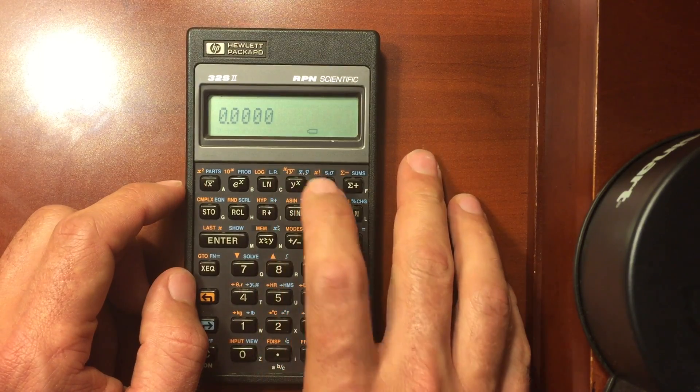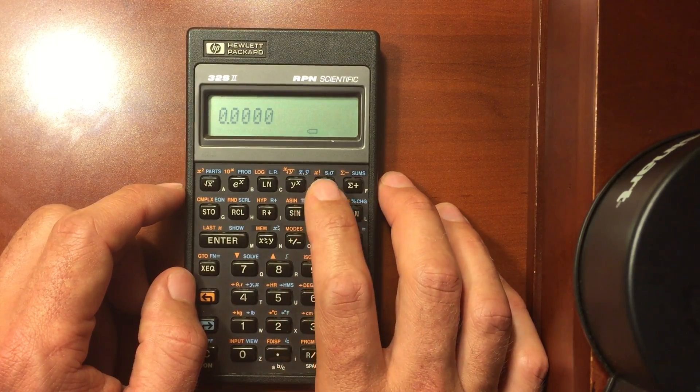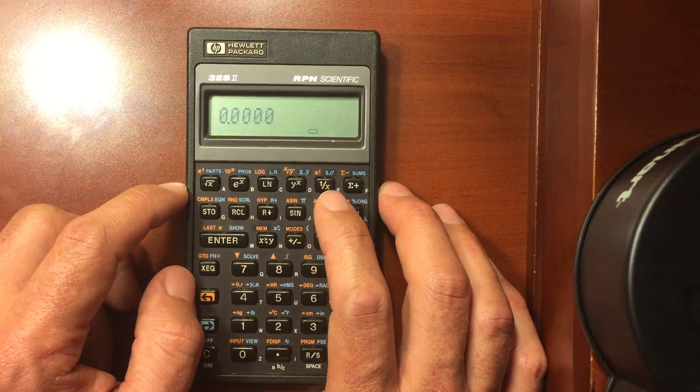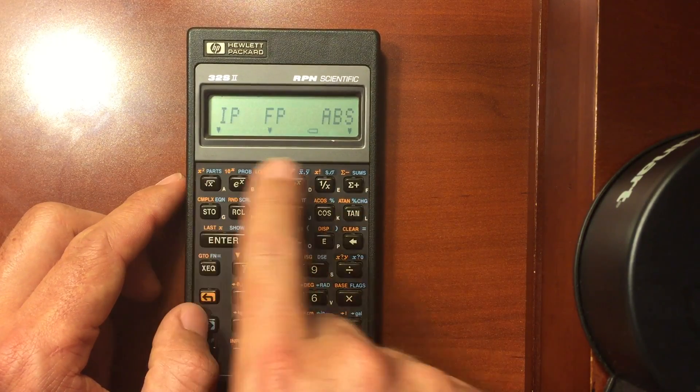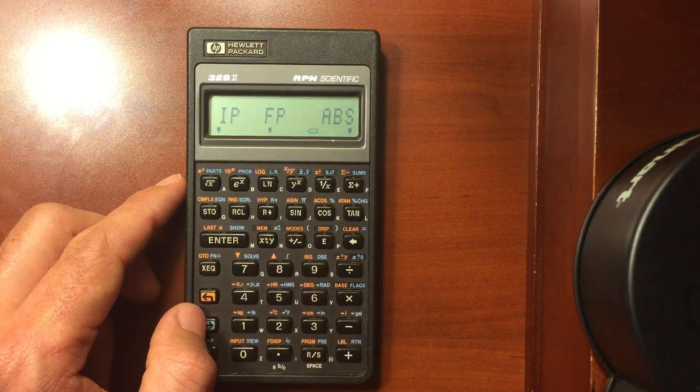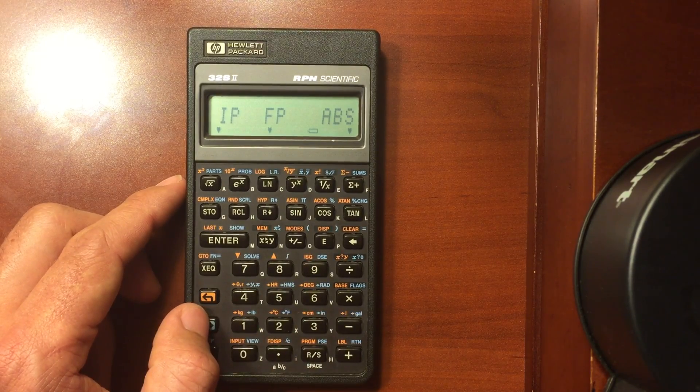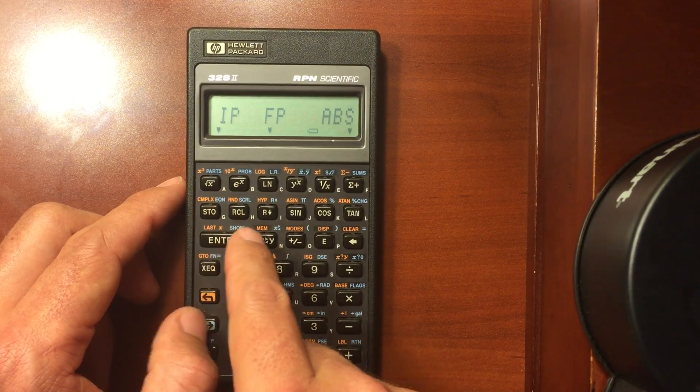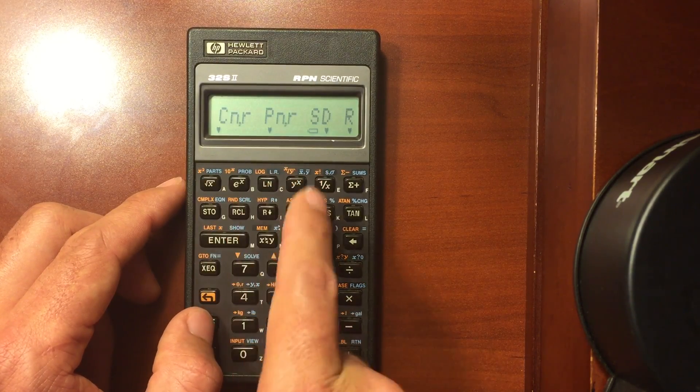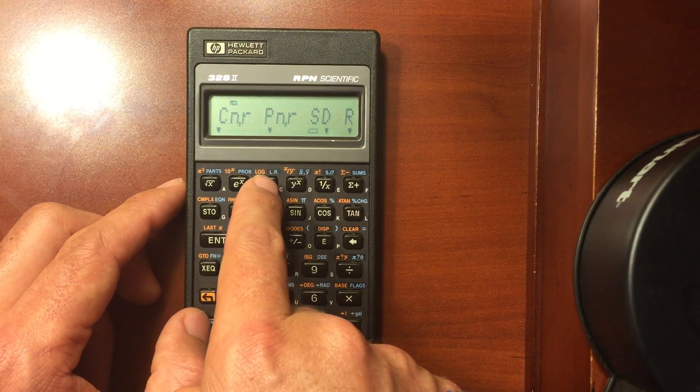Then you have several menus here. So you have a parts menu. One of the features of the 32s is it does have menus—you get more functionality than what you just see on the keyboard.